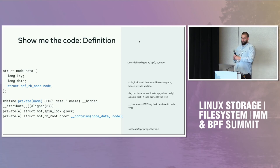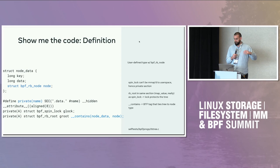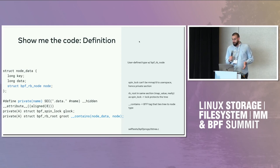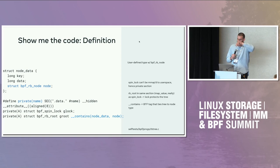Let's look at some code. This is a pretty long example split across multiple slides. Here's how we define an RB node — we have this special BPF RB node field within the struct definition, which says this user-defined type has a BPF RB node and is an RB tree node that goes into RB trees. We associate the RB root with a spin lock, and it has to be in a private section because it can't be mapped to user space. Because it's in the same section as a spin lock, the verifier knows that this spin lock protects the tree. We also added the __contains BTF tag that ties the node type to the root, telling the verifier this tree contains struct node_datas and its RB node field is called node.